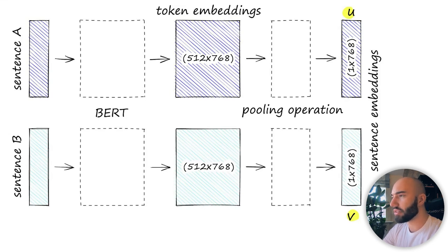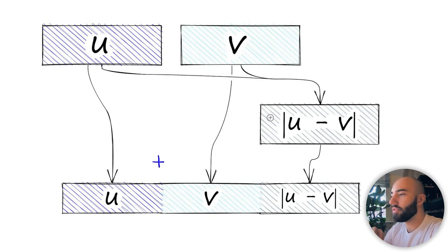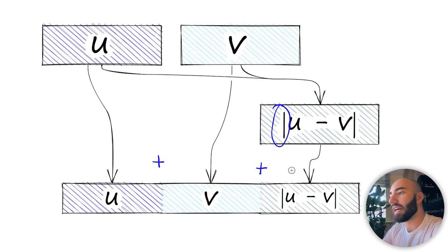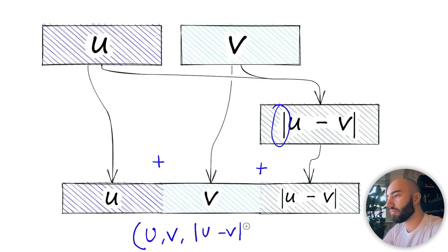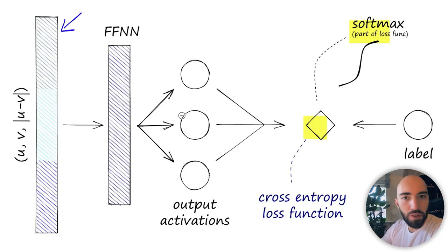That's the start of the model, but it's not the full model - we continue. We concatenate U and V together. We also take U and V and get the difference between them - the magnitude, so this is just a positive number representing the difference between the two vectors. We concatenate that as well, creating this big vector: U, V, and then U minus V at the end.